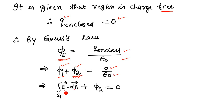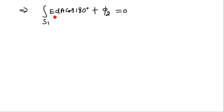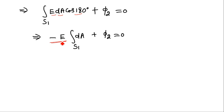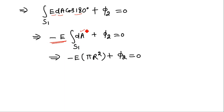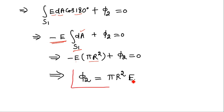For surface S1, the angle between the area vector and the electric field is 180°, so the flux becomes E dA cos180° = −E dA. Since the magnitude of E is constant, it comes outside the integral. The integral of dA over S1 gives the area of the circular base, which is πR². Moving this negative quantity to the right-hand side, φ2 = πR²E.